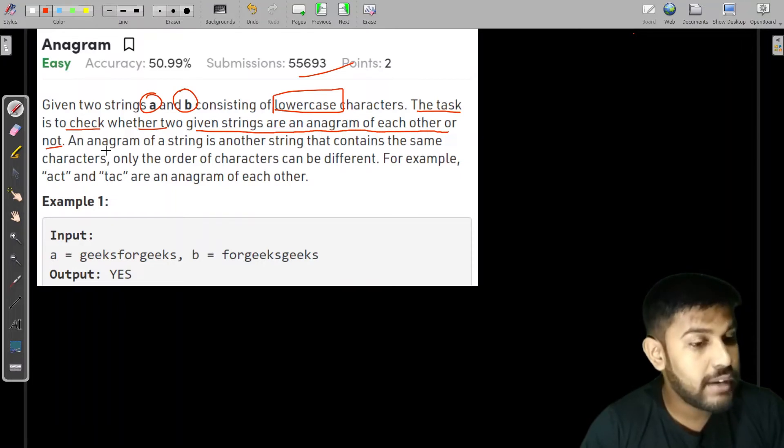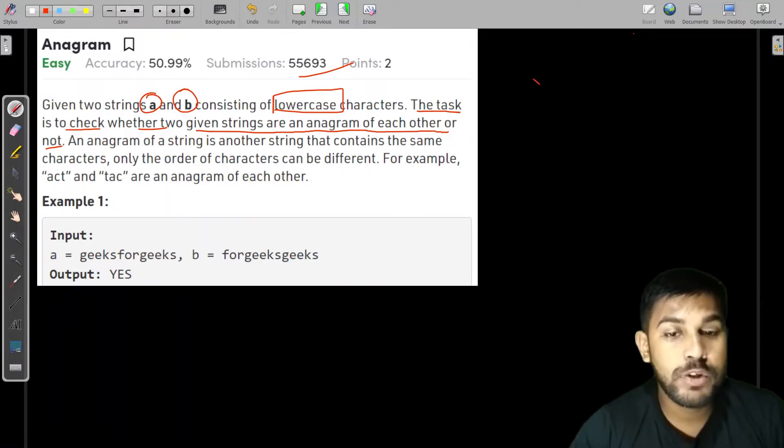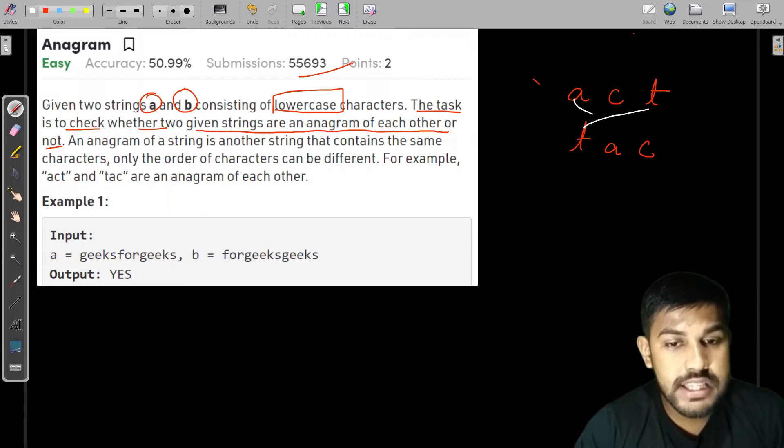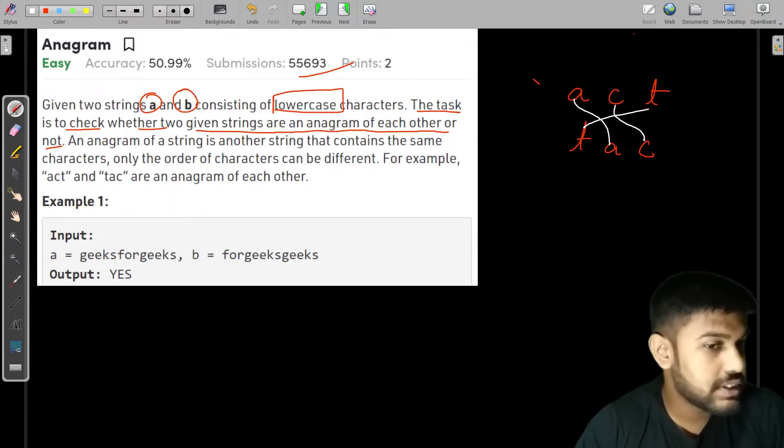Now what is an anagram? Suppose we have two words act and tack. Then we can see this T matches with this T, this A matches with this A, and this C matches with this C. What does this mean?